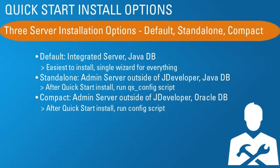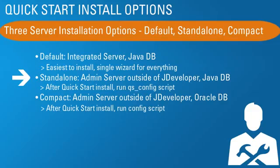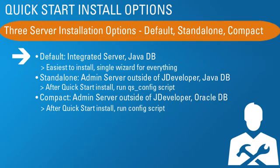Quick Start install options: there are three terms to remember — default, standalone, and compact. By default, you get an integrated server using Java DB. The Java DB is a compact database that gets installed and configured automatically. It's the easiest to install — a single wizard, basically a single click for everything. The standalone is the same configuration as the default, but the domain lives outside of JDeveloper. It still uses Java DB. After the Quick Start install, you just run one additional script.